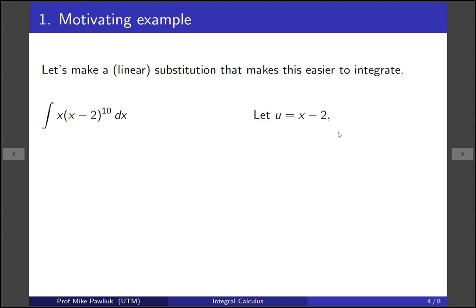So if we make the substitution now we have to figure out what the dx is but that's just going to be du. And then we make the substitutions. So x minus 2 here is u and now we have to figure out what this x is. So we're going to use our substitution to isolate for x. Adding 2 to both sides we get u plus 2 is x.